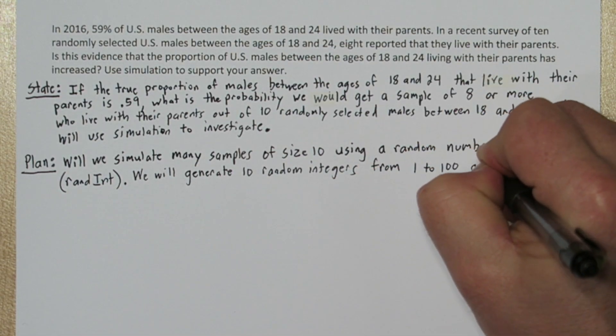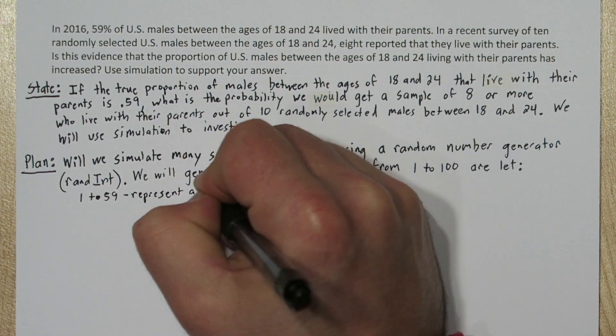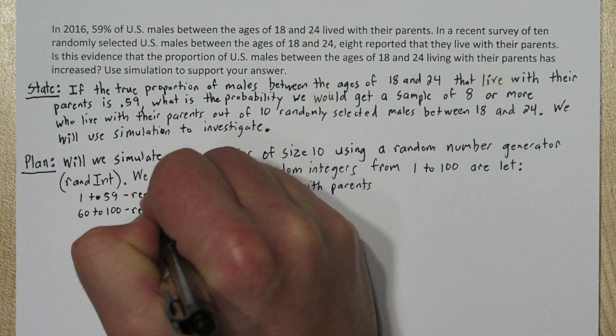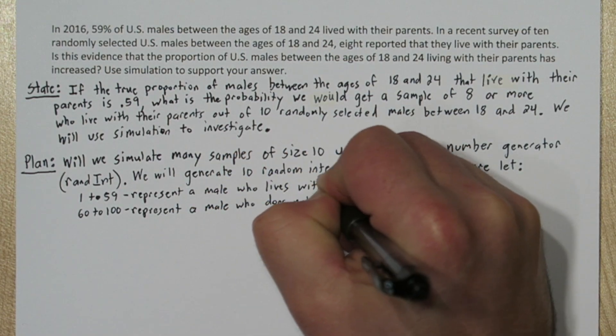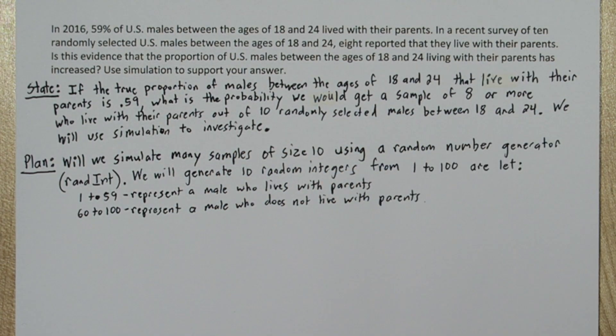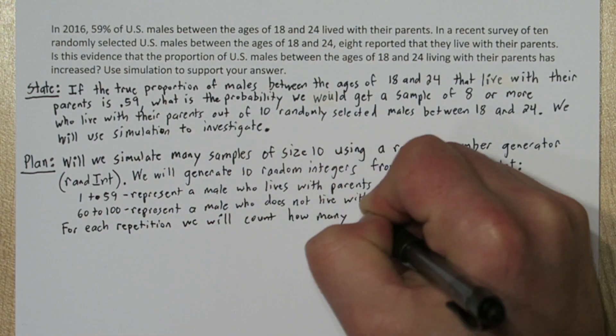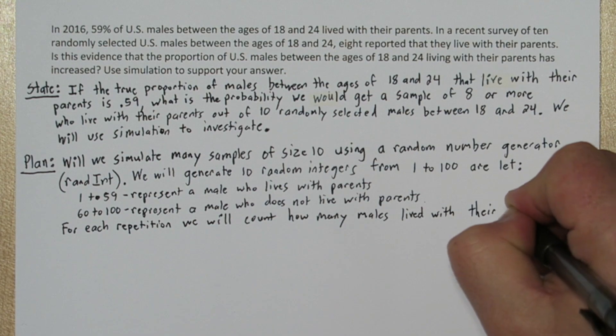We'll generate 10 random integers at a time from 1 to 100 and we're going to let 1 to 59 represent a male who lives with his parents and 60 to 100 represent a male who does not live with his parents. For each repetition we will count how many males lived with their parents or really how many numbers were between 1 and 59.